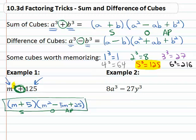This factors to (m + 5)(m² - 5m + 25). Again as always we could check this by multiplying it out.